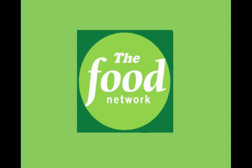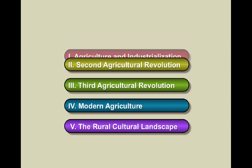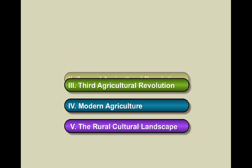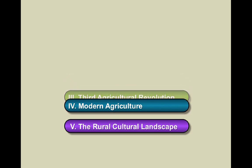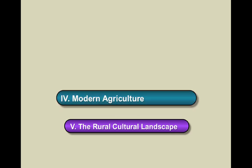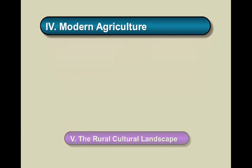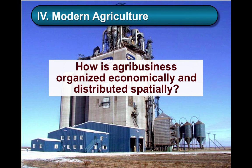Welcome to the Food Network Part 8. In this video we're going to continue looking at modern agriculture and ask this essential question: how is agribusiness organized economically and distributed spatially?